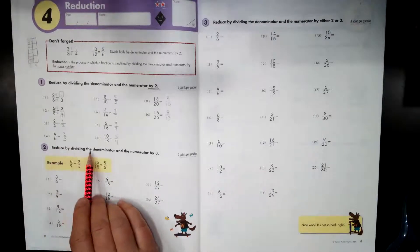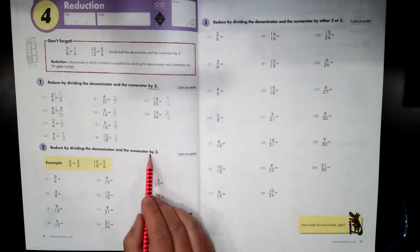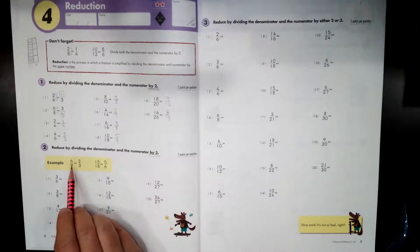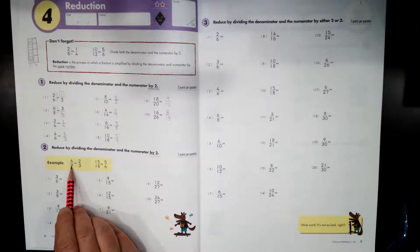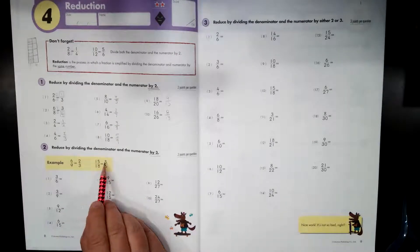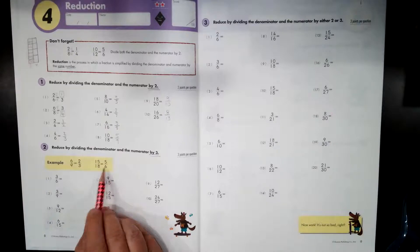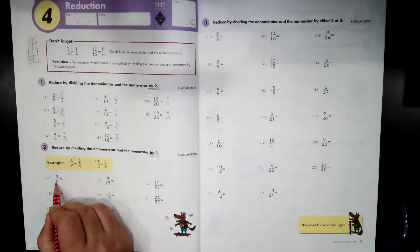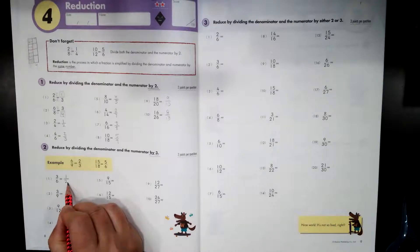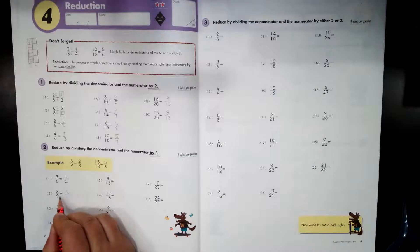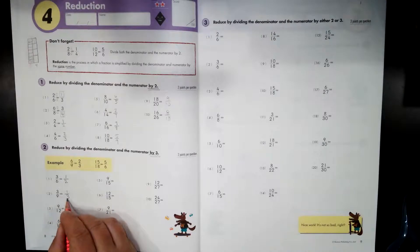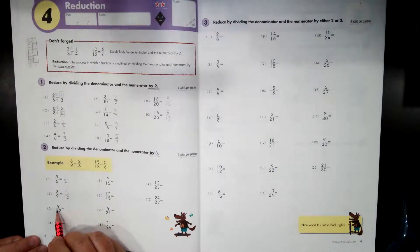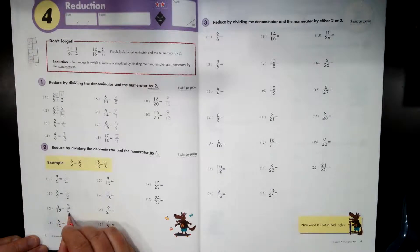Alrighty. So you finished the first part. Let's move on to two. Reduce by dividing the denominator and numerator by three. So now we're focusing on dividing by three. Here's our example. Six divided by three is two. Nine divided by three is three. Fifteen divided by three is five. Eighteen divided by three is six. So we're going to continue to divide by three. Three divided by three is one. Six divided by three is two. Three divided by three is one. Nine divided by three is three. Nine divided by three is three. Twelve divided by three is four.